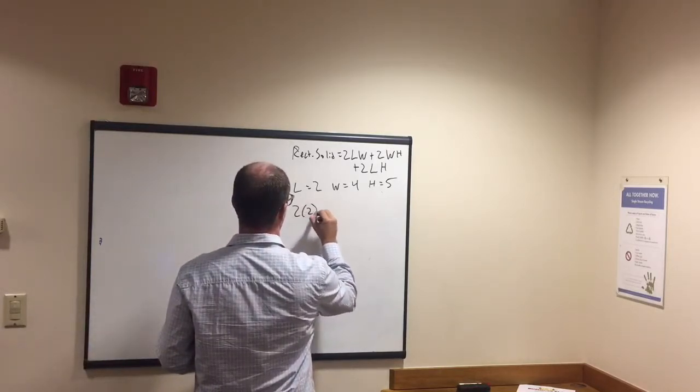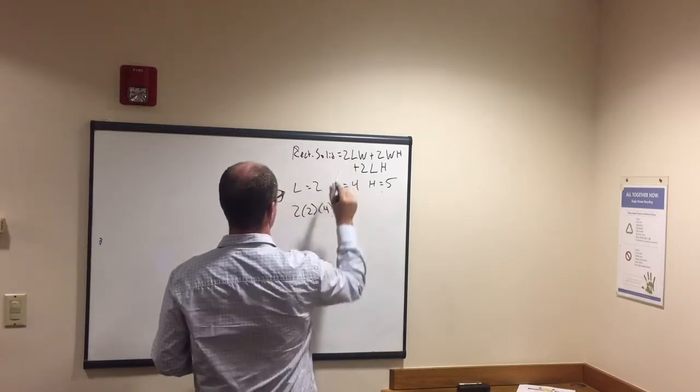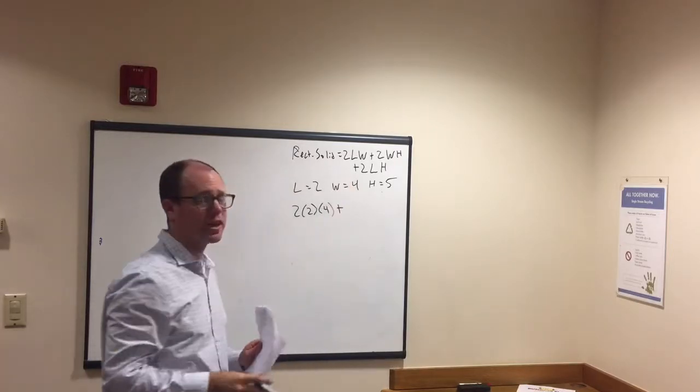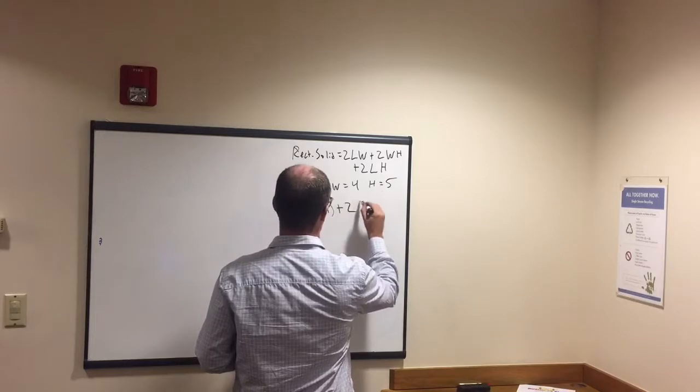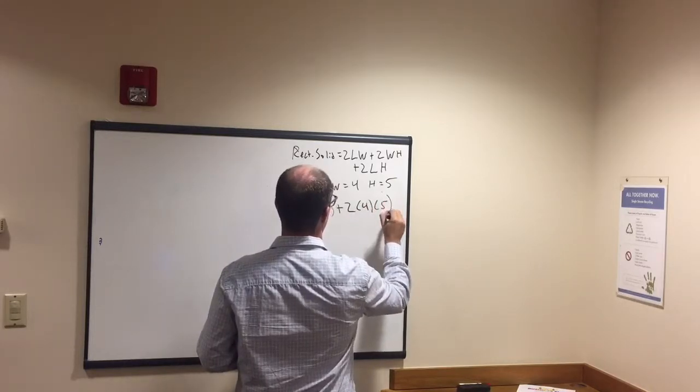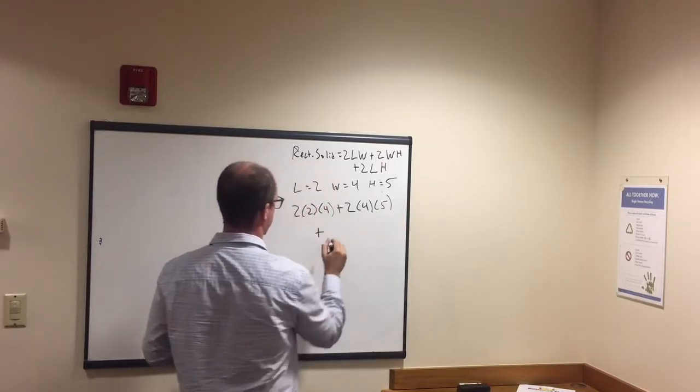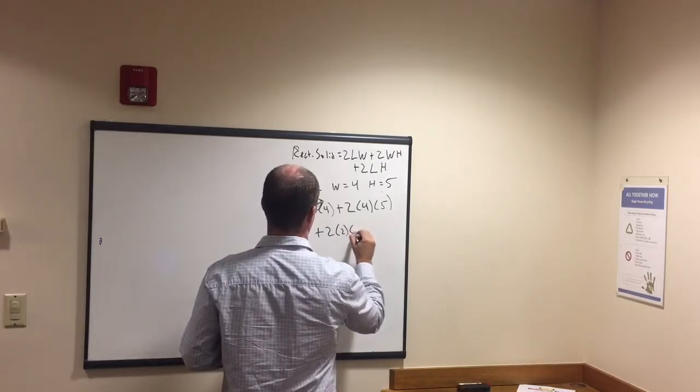So we go through exactly the same process. 2 times 2 times 4, and remember don't forget about these 2's, sometimes people do that, they forget to put the 2 in front of the length, the width and the height, and they won't get the right answer. So that's 2 times 4 times 5, that's width and height. Third one, 2 length height, 2 times 2 times 5.